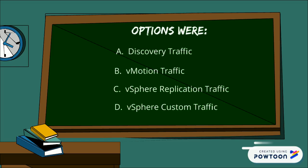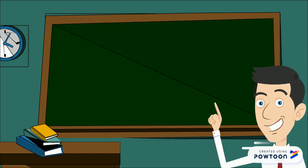Let's review your options again. A) discovery traffic and D) vSphere custom traffic cannot be the answer because we don't have a dedicated TCP stack for custom traffic, and there is no such thing called discovery traffic. So A and D cannot be the answer. vMotion traffic and vSphere replication traffic are the only traffic types which require dedicated VM kernel adapters.